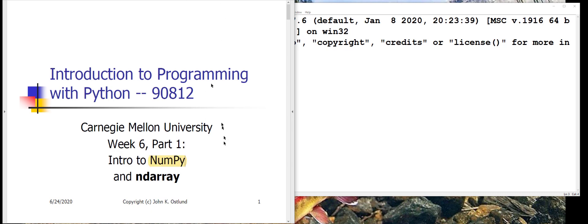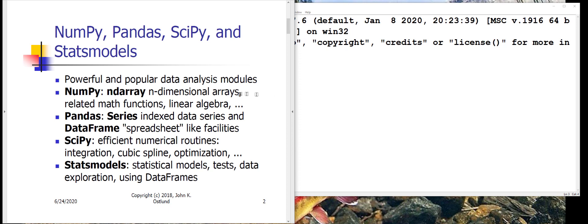In particular, NumPy defines a data type called ndarray, which is an n-dimensional array type. NumPy is one of several important data analysis and manipulation modules that are available. There are other ones that you will encounter as you get further into Python.